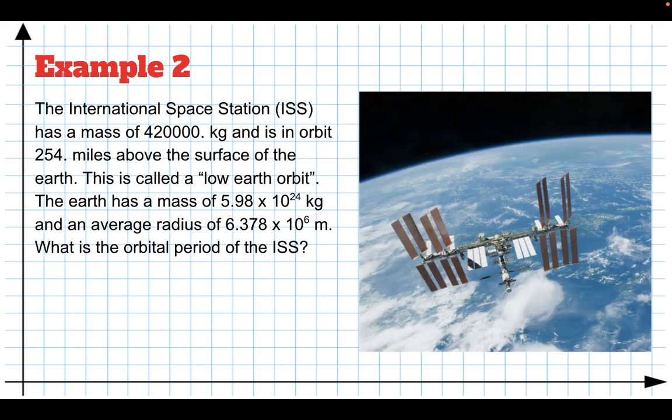Here's a second example, which I'm going to solve algebraically. The space station is up there above the Earth. It has a mass of about 420,000 kilograms, and it's 254 miles above the surface of the Earth. This is called low Earth orbit. We know the mass of the Earth, and we know the radius of the Earth. So, the question is, what is the orbital period of the International Space Station? That's what we're going to try to find.